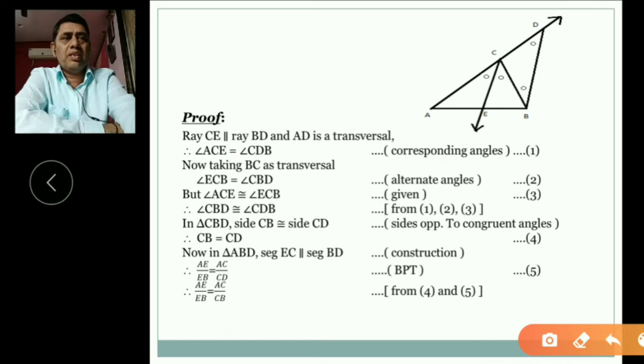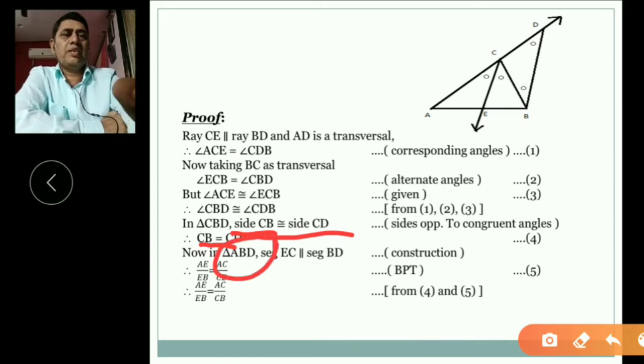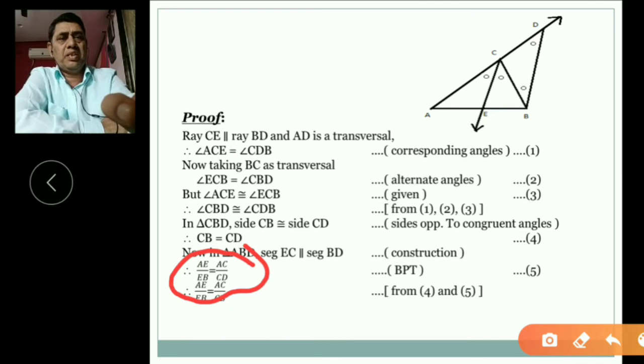Now taking BC as transversal, then angle ECB is equal to angle CBD by alternate angle. From that in triangle CBD, side BC is congruent side CD. We know side opposite to congruent angles. By that theorem we write: In triangle ABD, CE is parallel to BD by construction.